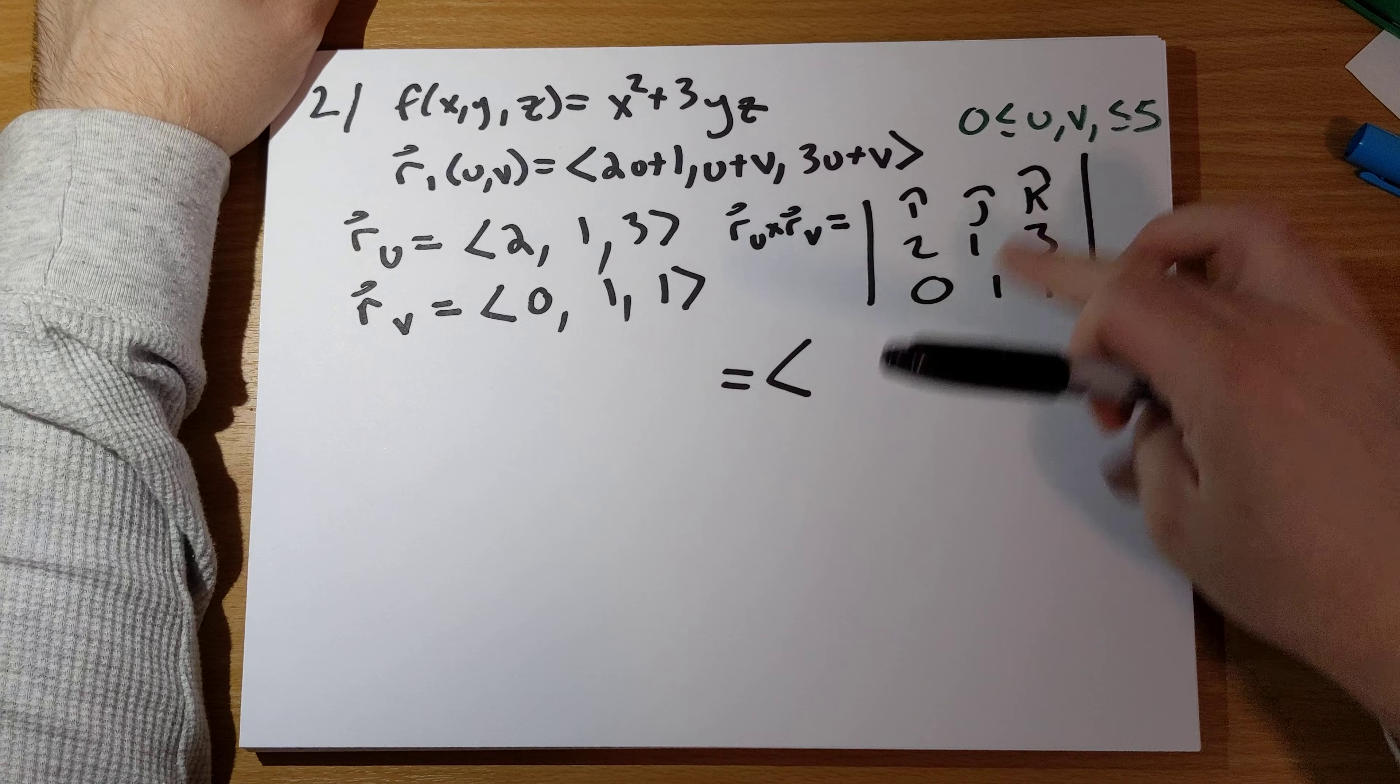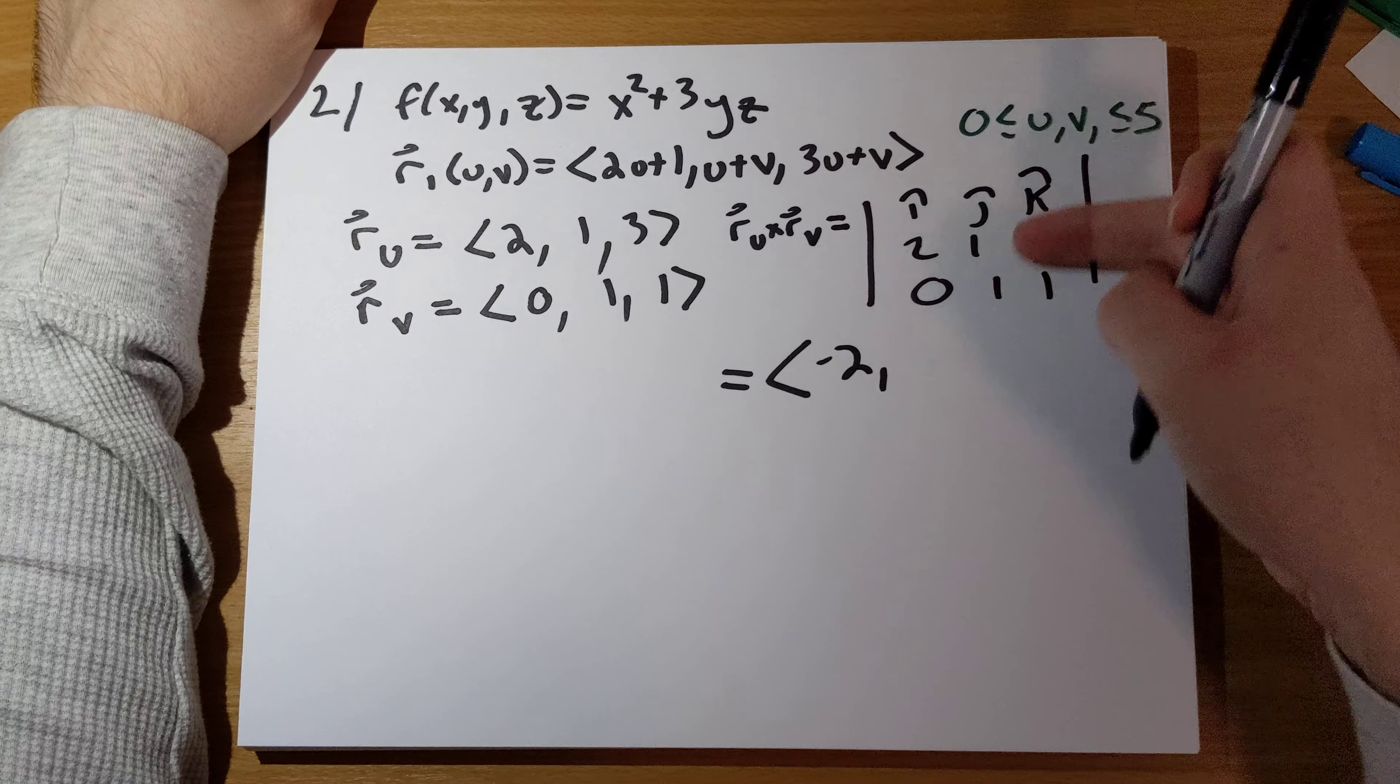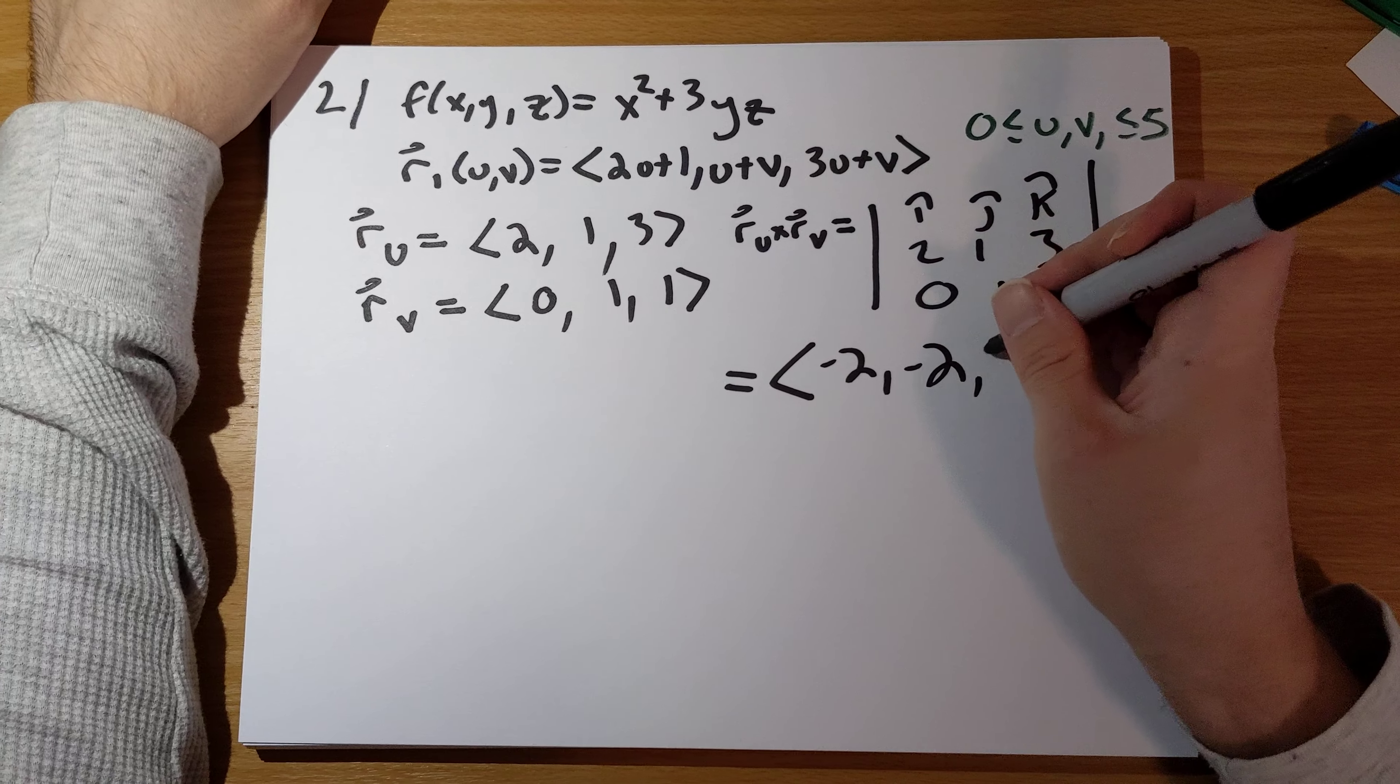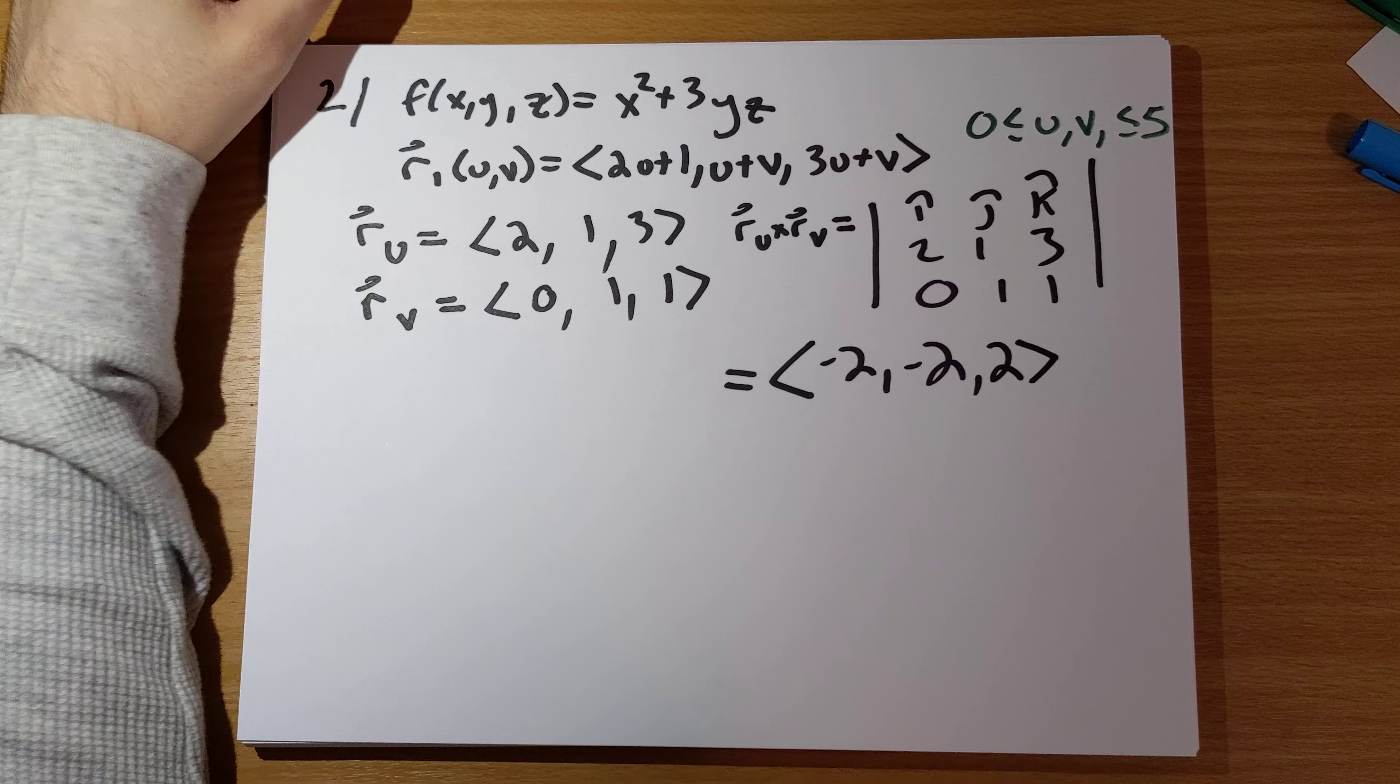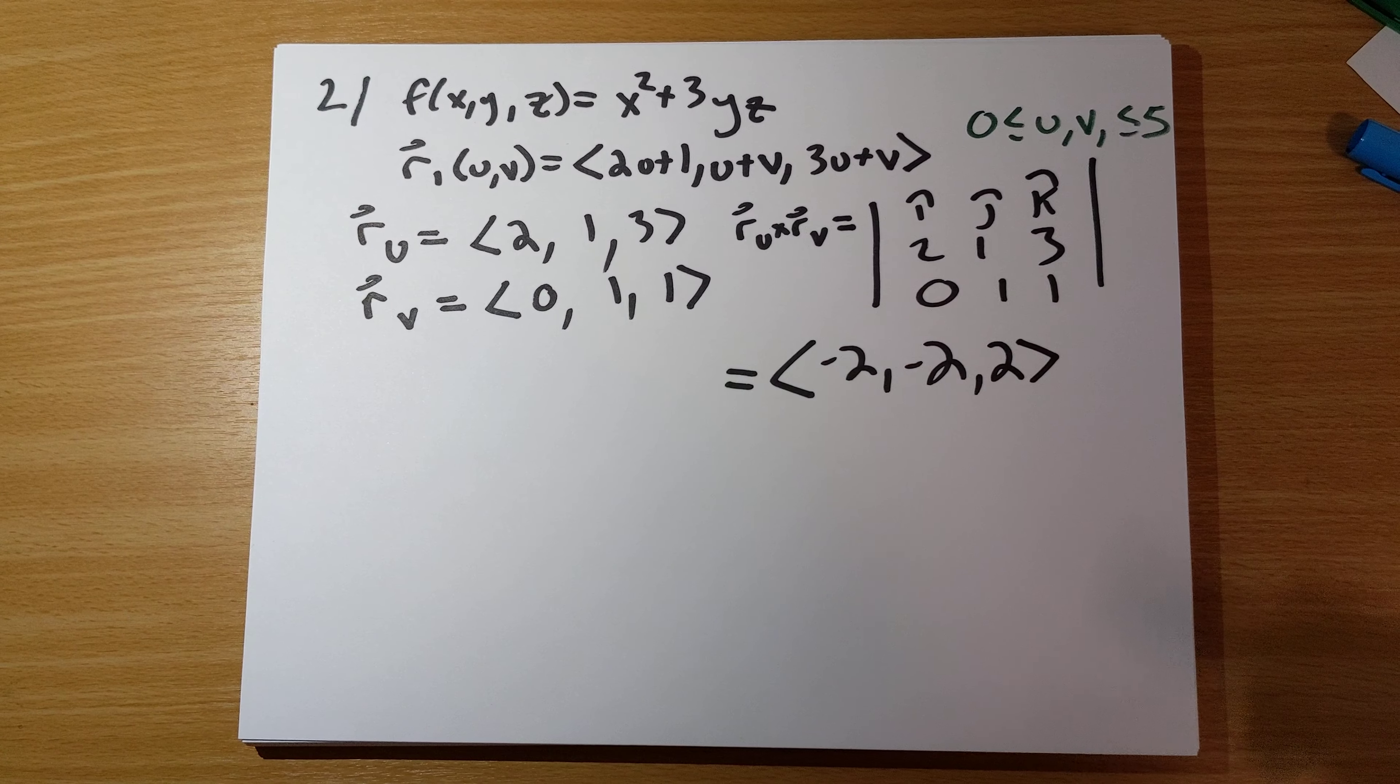What do we end up with? The i hat component is going to be 1 minus 3 is negative 2. The j hat component is 0 minus 2 is negative 2. The k hat component is positive 2 here. So, this is the cross product here.